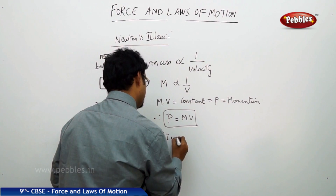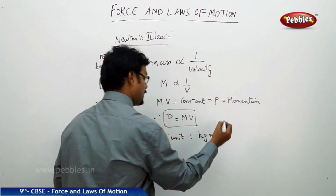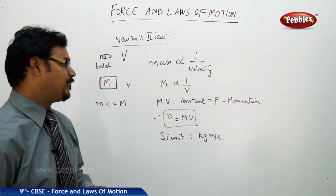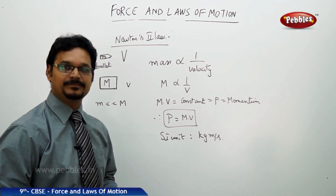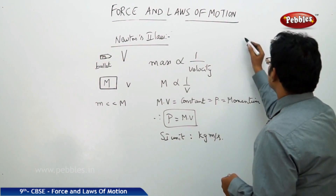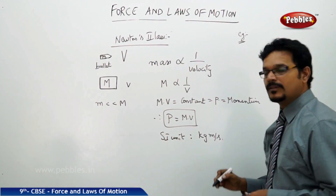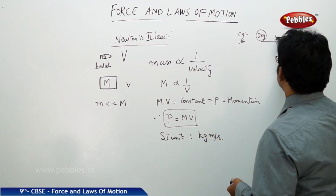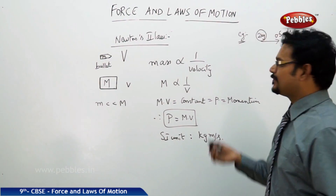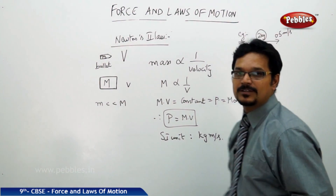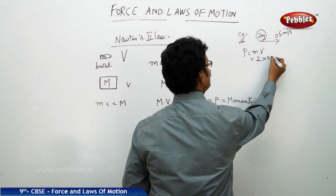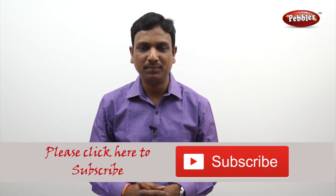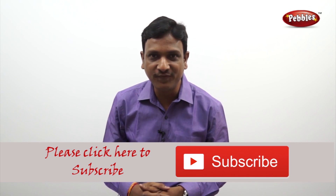The SI unit of momentum is kg·m/s, since mass is in kg and velocity is in meters per second. Momentum is defined as the product of mass and velocity. For example, a ball of mass 0.2 kg thrown with velocity 0.5 m/s has momentum p = mv = 0.2 × 0.5 = 1 kg·m/s. If you like this video, please give a thumbs up and subscribe to our channel for more videos on the CBSE syllabus.